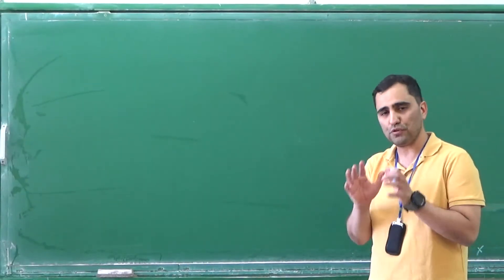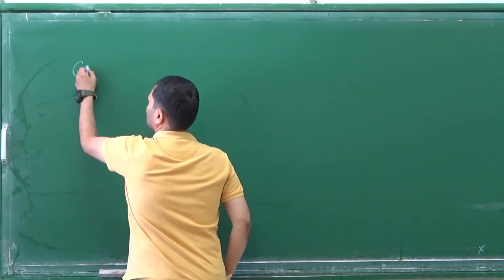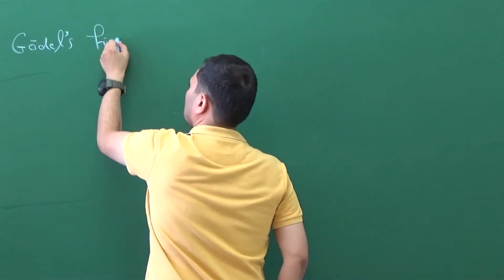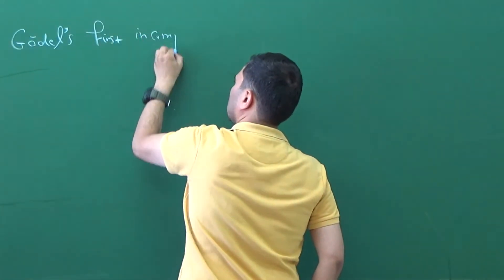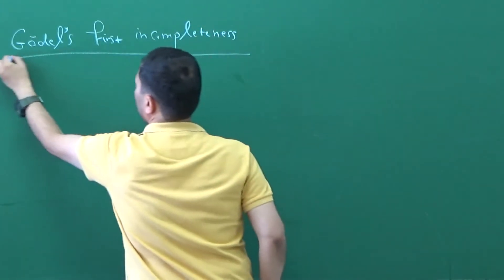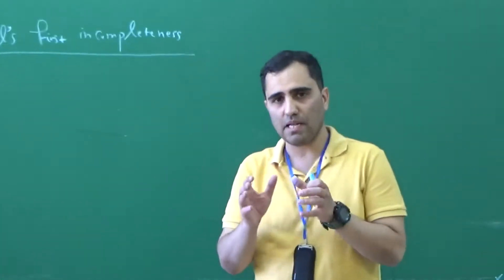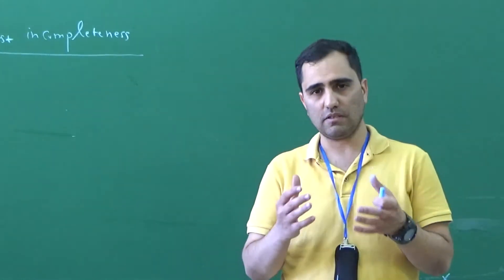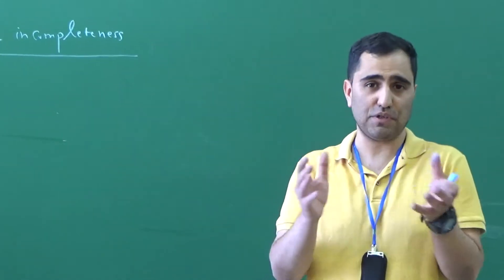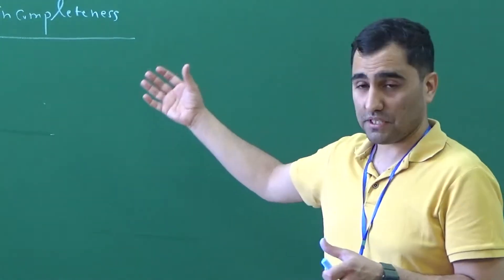In this video, I'm going to talk about the proof of Gödel's first and second incompleteness theorems. Gödel's first incompleteness theorem is about the question of decidability of mathematics, or more specifically, decidability of number theory. Is it possible to replace a mathematician with a computer algorithm? The answer to this question is no, and this no is what Gödel's first incompleteness theorem says.